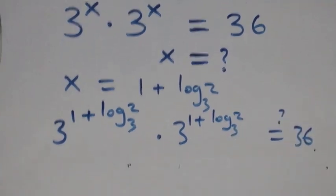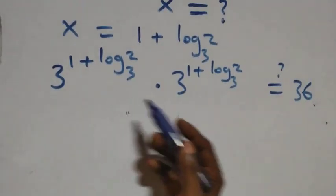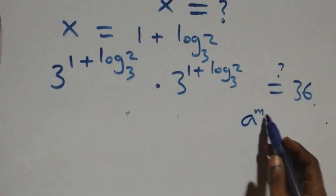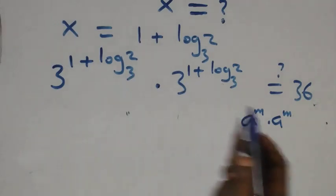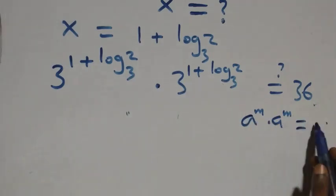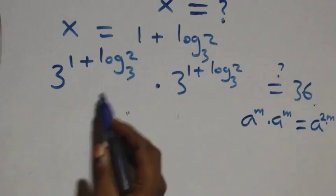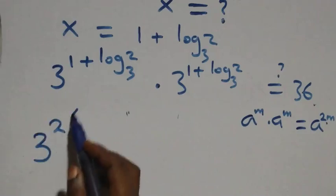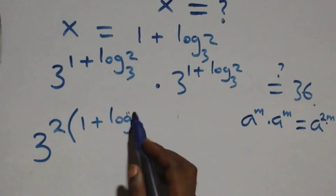When we have the same base multiplying, we add the powers. This follows from: a raised to power m, times a raised to power m, equals a raised to power m plus m, which is 2m. In the same way, we can write this as 3 raised to power 2 times the quantity 1 plus log 2 base 3.